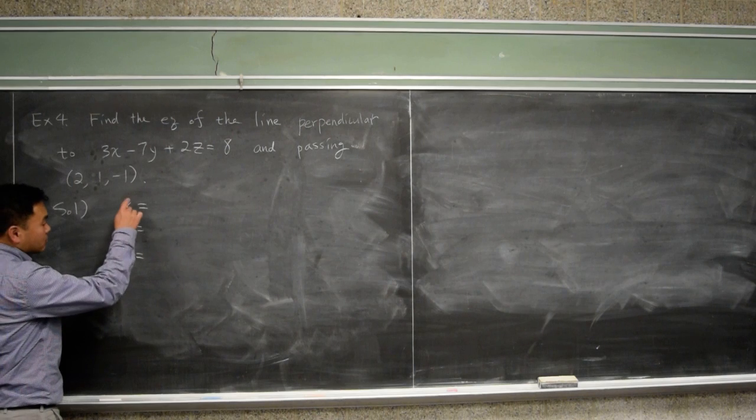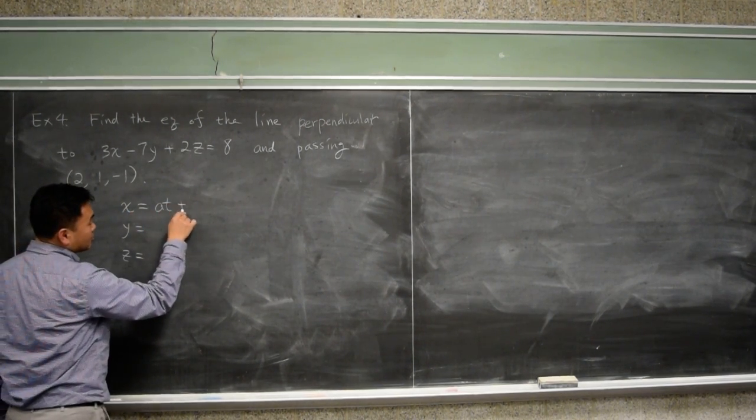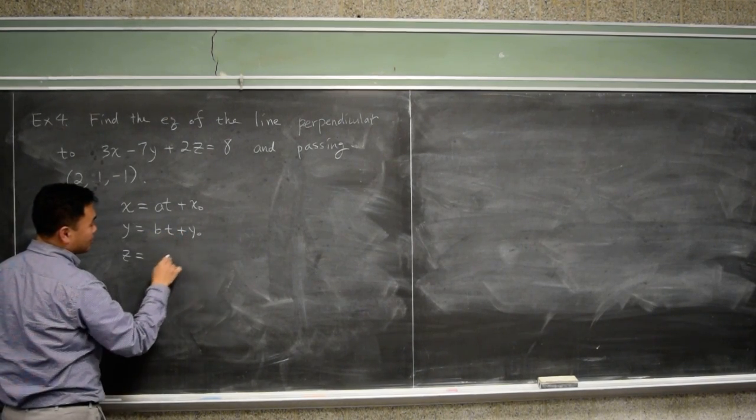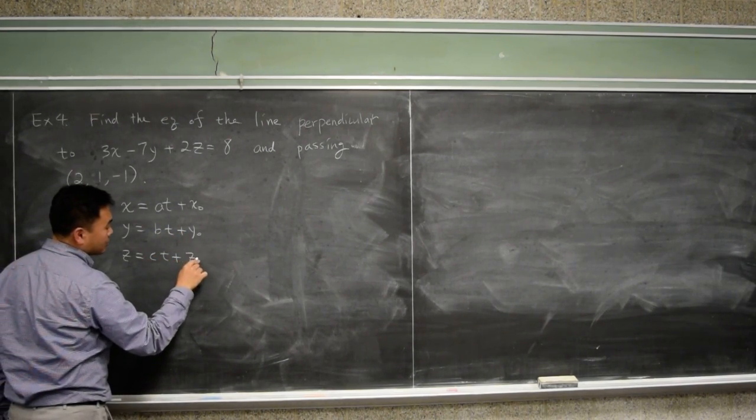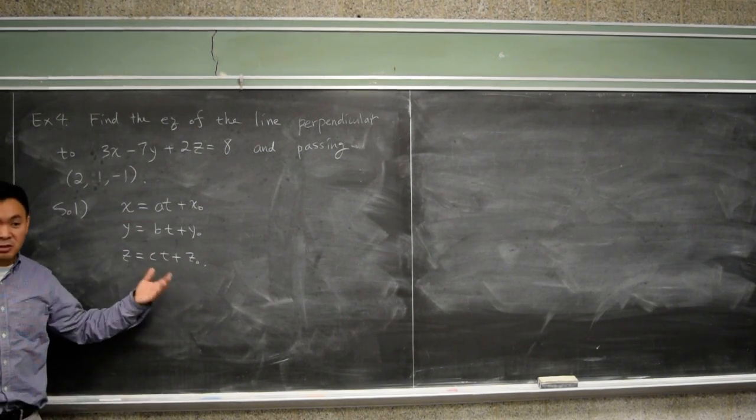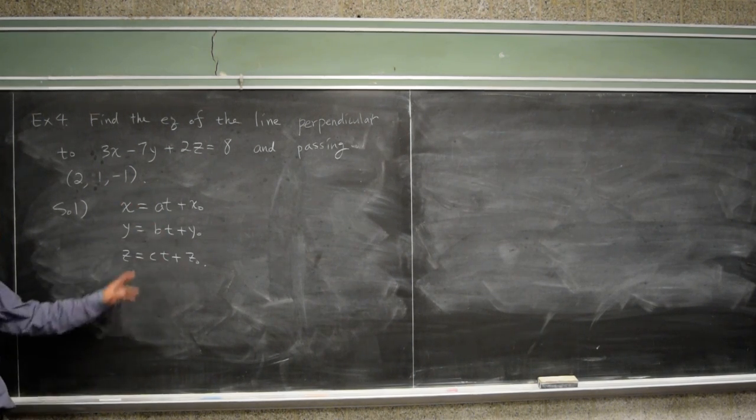So first, in parametric form, it's AT plus X naught, BT plus Y naught, CT plus Z naught. And if you differentiate this as A comma B comma C, we know that that's the direction of this line or the velocity of the moving particle.